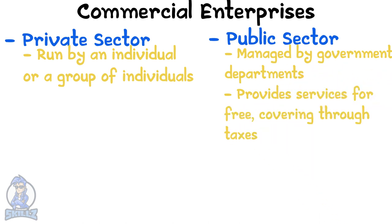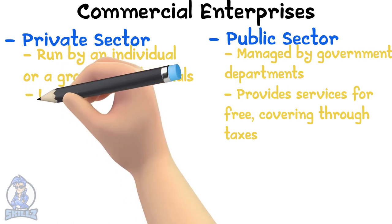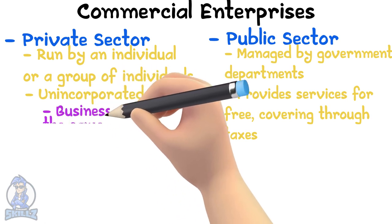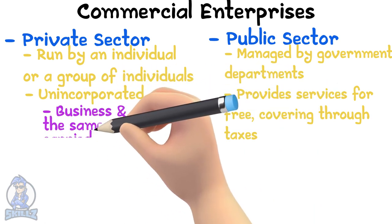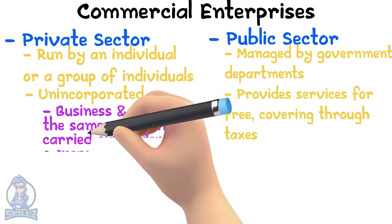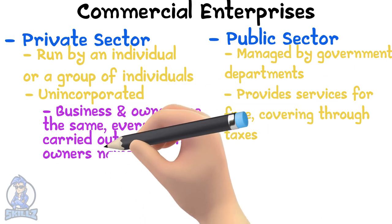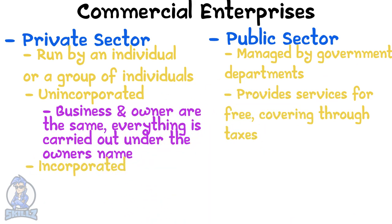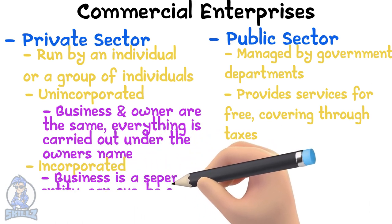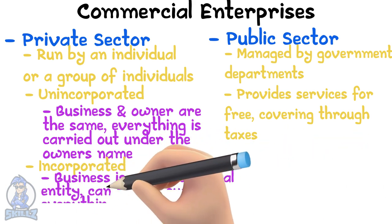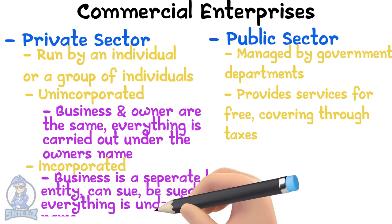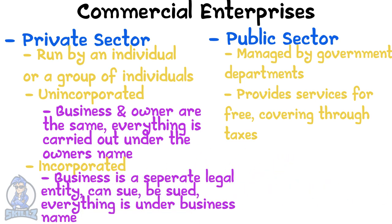Here are the two main types of businesses in the private sector. Unincorporated: businesses where the owner and the business are the same, so everything related to the business is carried out in the owner's name. Incorporated: businesses where the business is a separate legal entity — the business can be sued or closed down, and all things are carried out under the business's name.